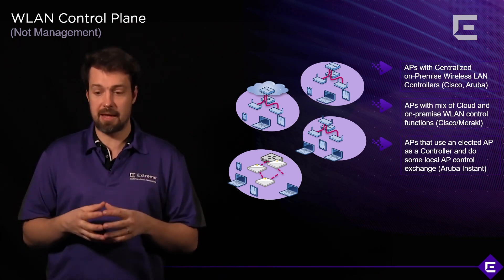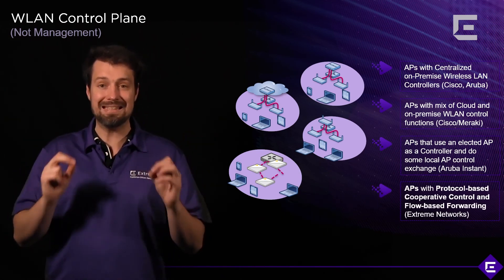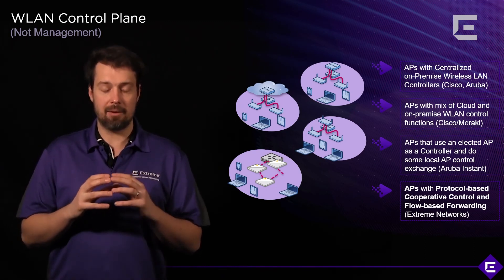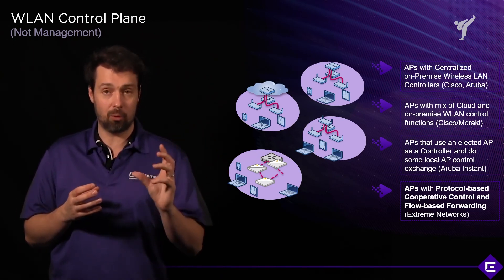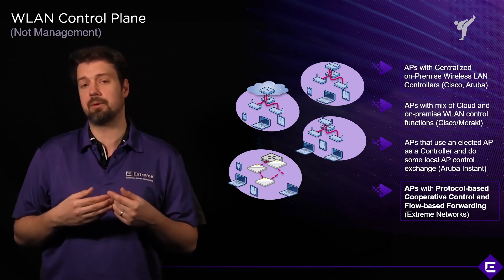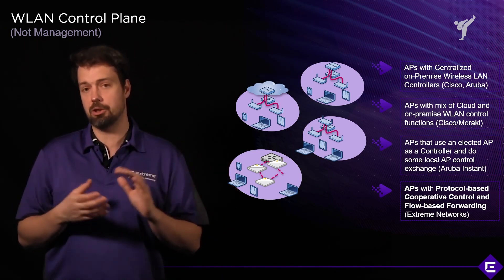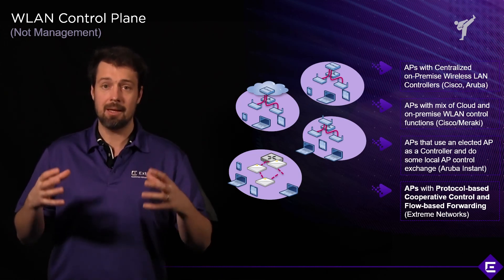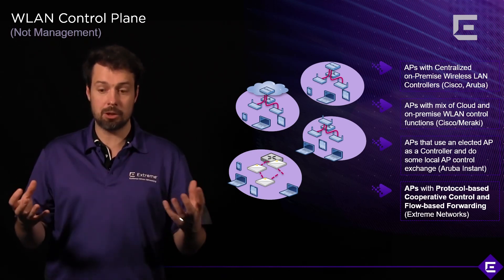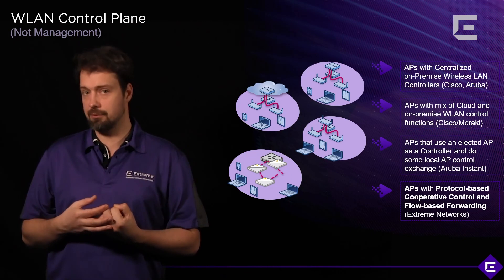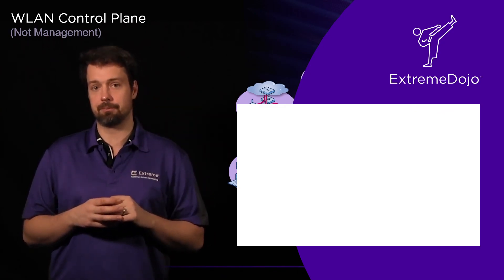Finally, what Extreme offers is access points with cooperative control. We use cooperative control protocols to implement a distributed control architecture. Instead of relying on controllers to process all data streams, we implement flow-based forwarding on the APs themselves — enabling application visibility and control, an AP-layer-7 firewall, and other features. All features that would normally be implemented at a central point are implemented on the APs themselves, and they coordinate with each other using cooperative control protocols to make correct network decisions without creating bottlenecks on the APs or any controllers.